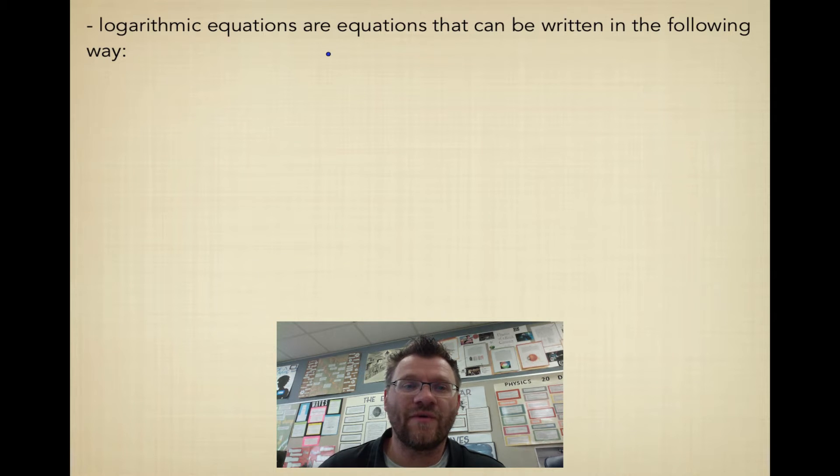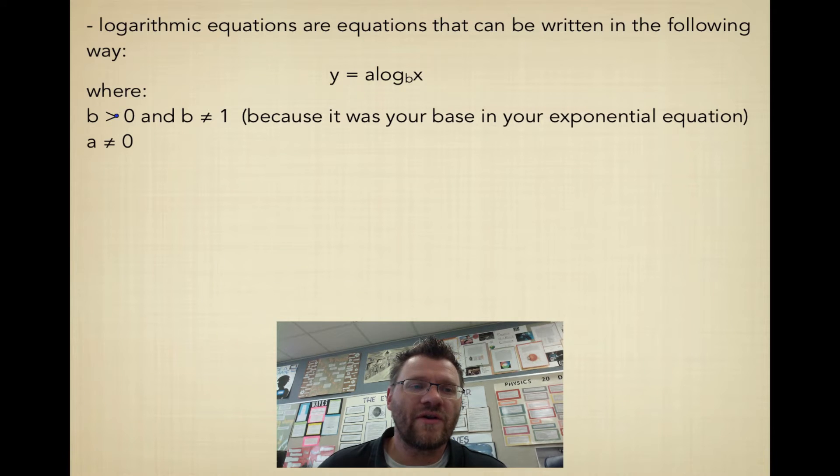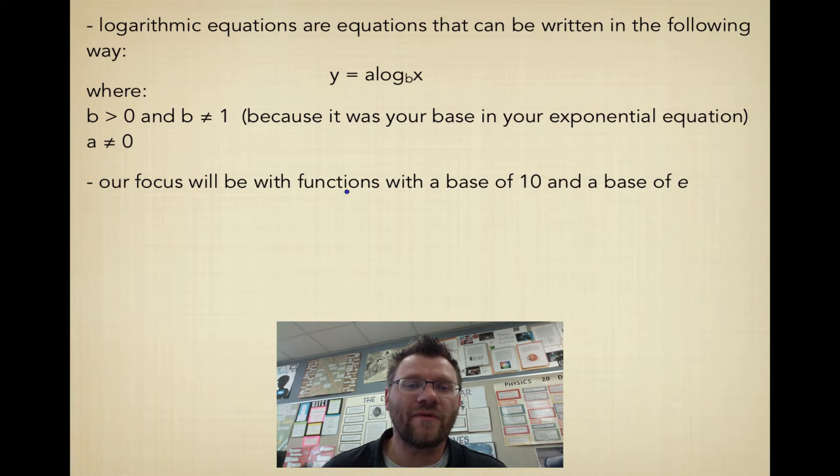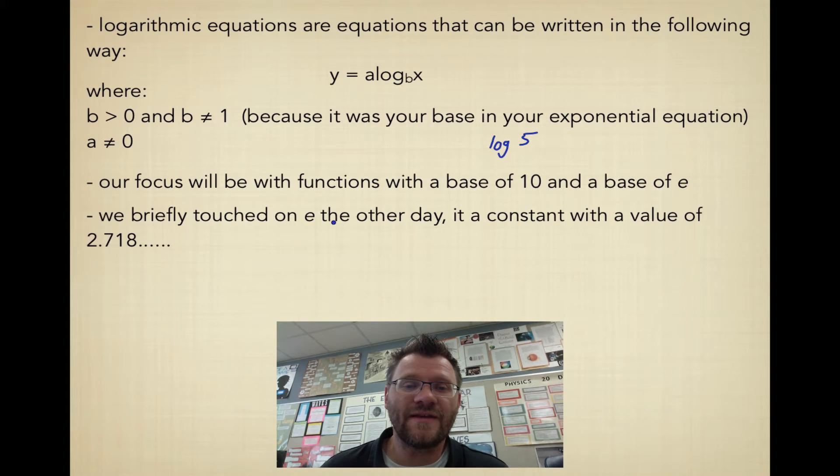So logarithmic equations are equations that can be written in the following way: y = a log_b(x). So b is going to be greater than 0, and it also cannot equal 1 because it was the base in your exponential equation. And because it was the base, there's no way that it can actually equal 1. And a, this number in front, is not going to equal 0. Our focus will be with functions of base 10 and of base e. Now we briefly touched on e the other day. It's just a constant with a value of 2.718, blah, blah, blah.